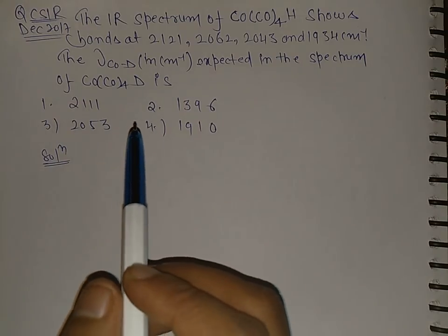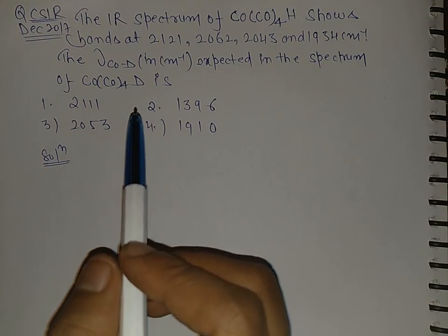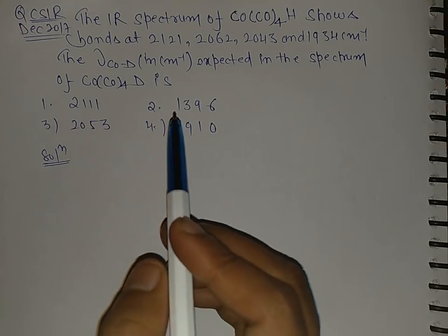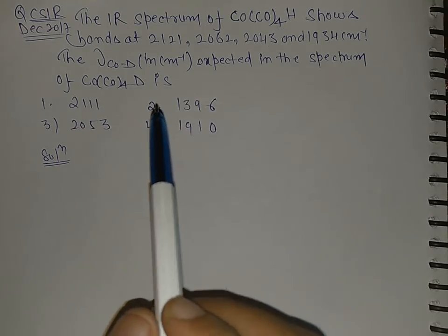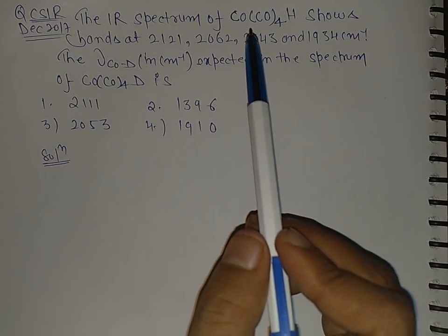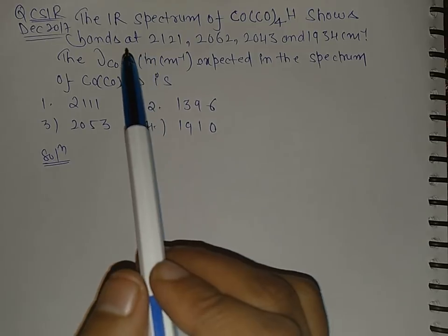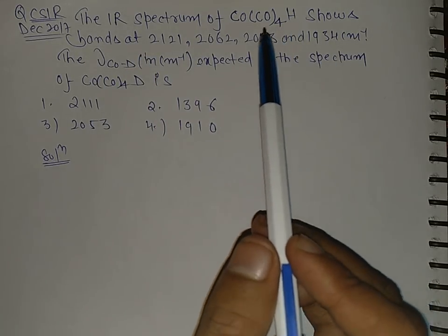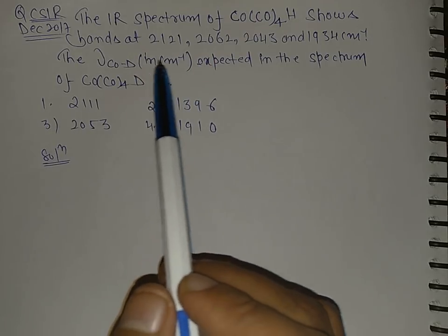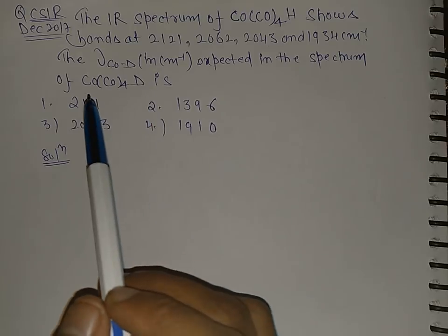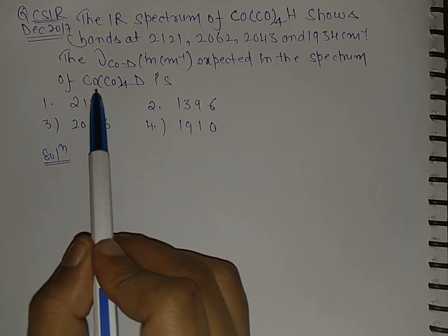Hello everyone, so this question came yesterday for two marks in the CSIR December 2017 exam. In the question, it is given that for this complex the stretching bands are this much, and now the hydrogen has been replaced by the deuterium.